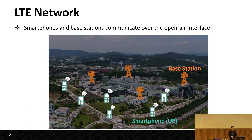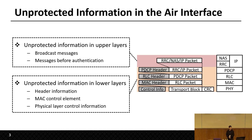When we use LTE services, our smartphones or UEs and base stations communicate over the open air interface. This means that an eavesdropper can also listen to unencrypted information. The design of the LTE protocol stack leaves unprotected information in different layers. For example, in upper layers, broadcast messages and messages before authentication are unprotected. In lower layers, header information, MAC control elements, and physical control information are not encrypted.